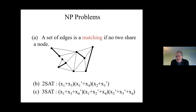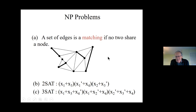An NP problem is one where, given one of these substructures — what you claim as a solution — you can easily verify whether it's a solution. For matchings, all you have to verify is that no two edges share a vertex. NP means a purported solution is easily verified. Many problems in combinatorics have this idea: it may be hard to find a solution, but it's easy to check.